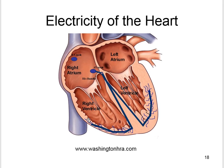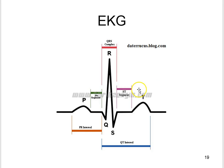The SA node activates the atria — that's the P wave. The atria contract and force blood into the ventricles. The ventricles are activated, producing the QRS complex. The electrical current then spreads back over the ventricles in the opposite direction, producing the T wave, also known as the recovery wave.